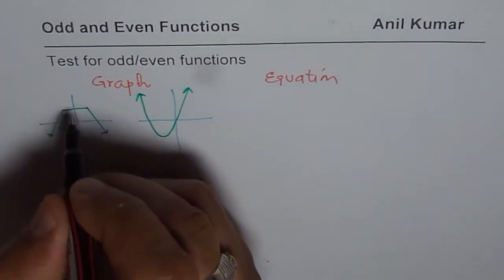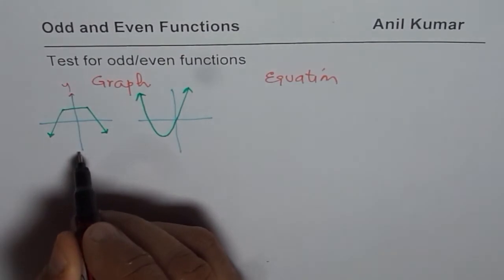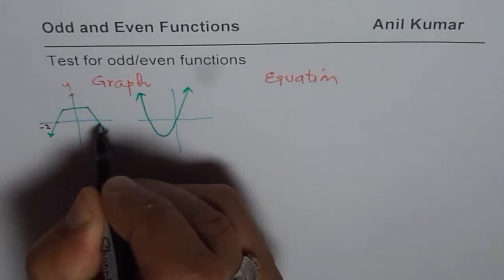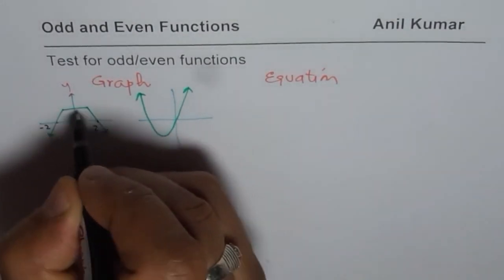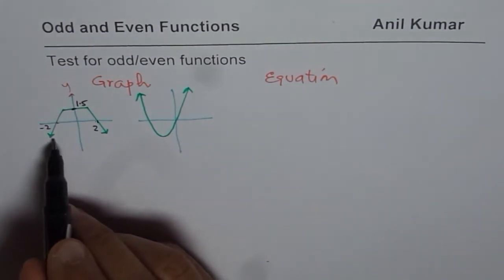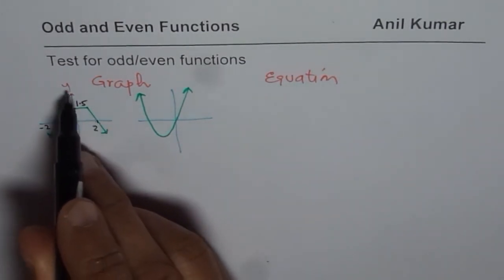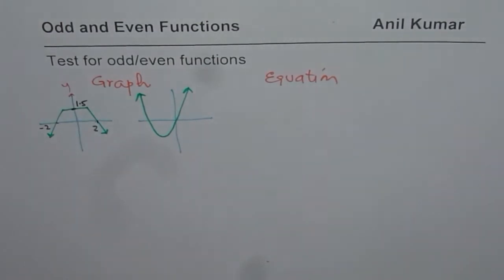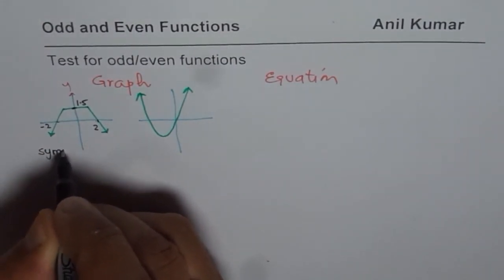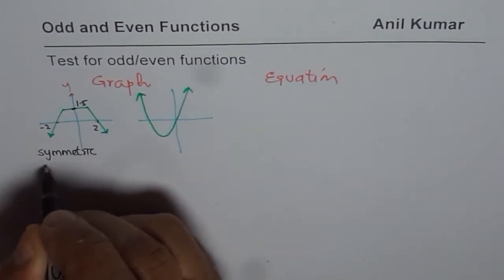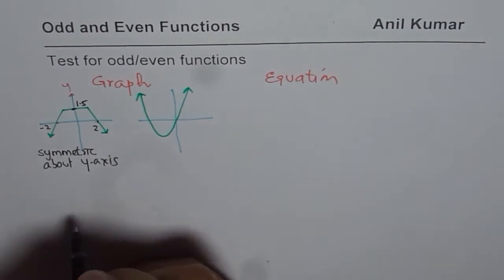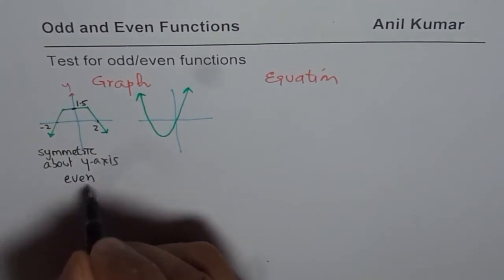It seems as if the y-axis is the line of symmetry and all these points are symmetric. Let me label this point as minus 2 and this as 2, and let this be 1.5. In that case we are sure that there is a point which is symmetric about the y-axis on this graph. So we can say this particular graph is symmetric about the y-axis, and therefore this is an even function.